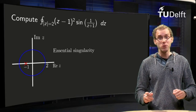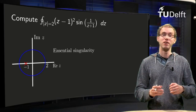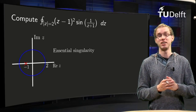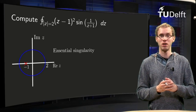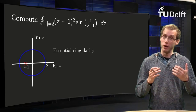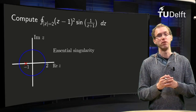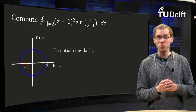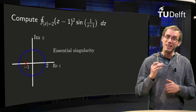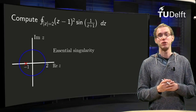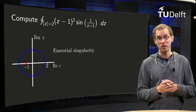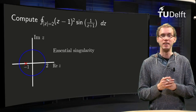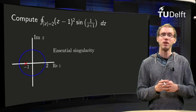Can we compute the contour integral if we have an essential singularity inside our contour? We cannot use our formula for a pole to compute the residue. We can however use the Laurent series of the function, as we'll see in this video.